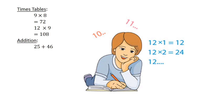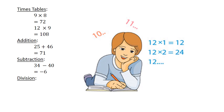Addition: 25 plus 46 equals 71. Subtraction: 34 minus 40 equals negative 6. Division: 12 divided by 4 equals 3.